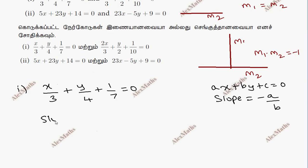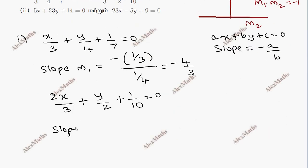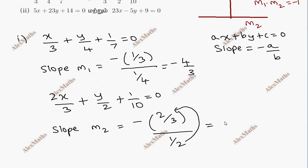The first equation slope: x-coefficient is 1 by 3, y-coefficient is 1 by 4. So slope m1 equals minus (1/3) divided by (1/4), which gives minus 4 by 3.